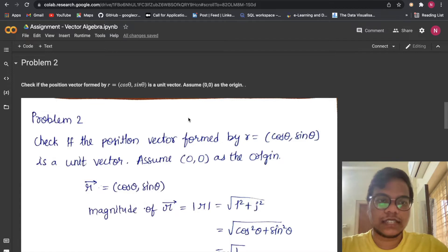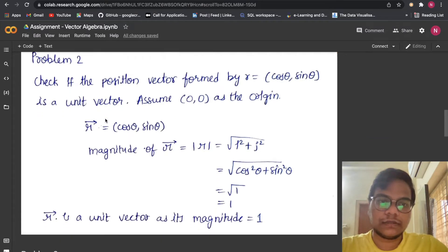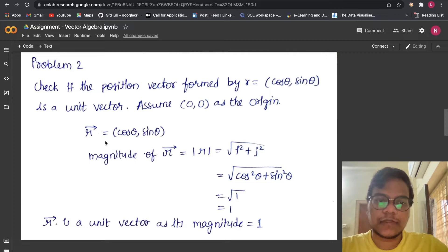Now we are going to solve Problem 2: Check if the position vector formed by r̄ = (cos θ, sin θ) is a unit vector. Assume (0, 0) as origin. So r̄ = (cos θ, sin θ). To find the magnitude, |r̄| = √(i² + j²), where i is cos θ and j is sin θ. So cos² θ + sin² θ = 1 as we learn from trigonometry, so √1 = 1. Therefore, r̄ is a unit vector as its magnitude equals to 1.